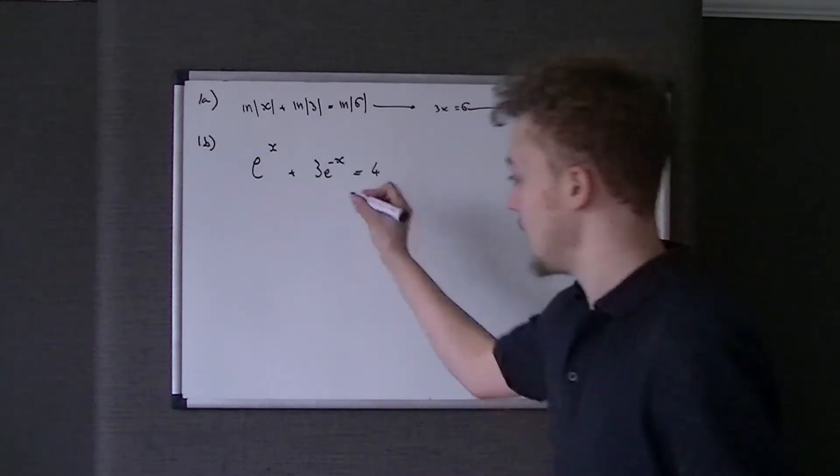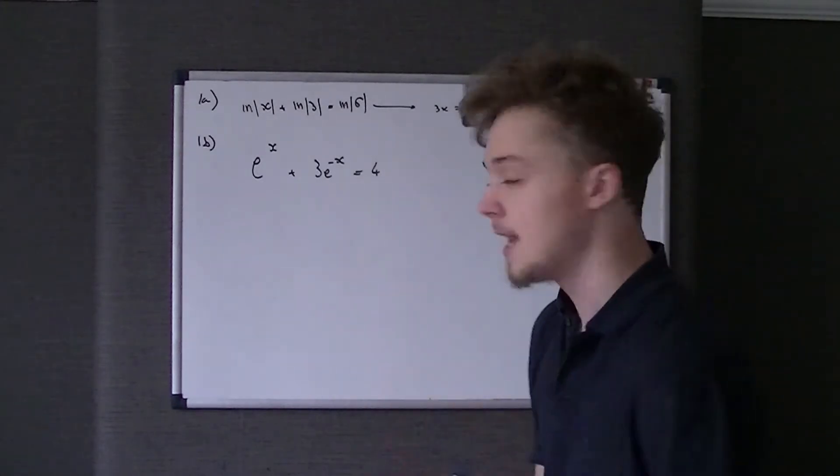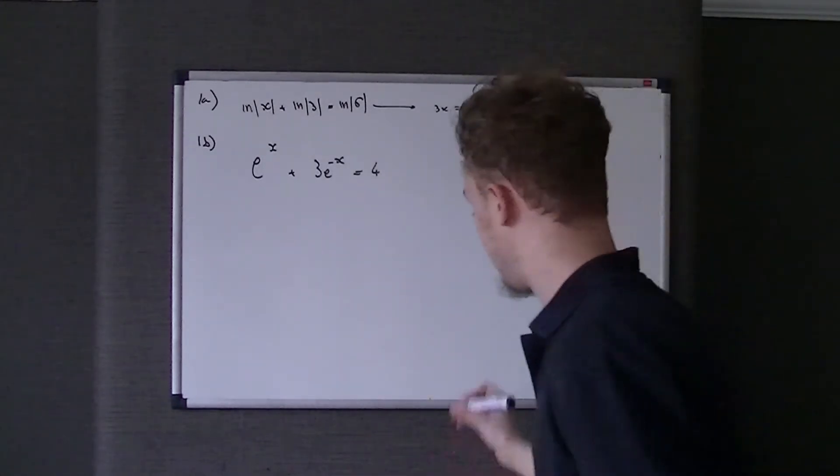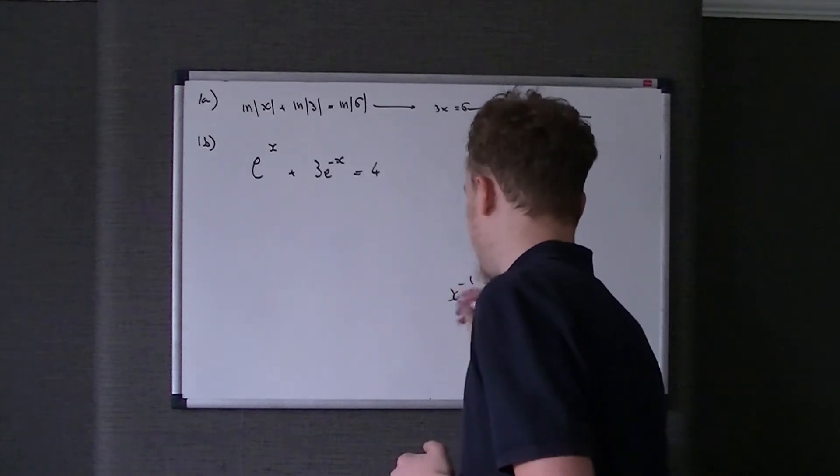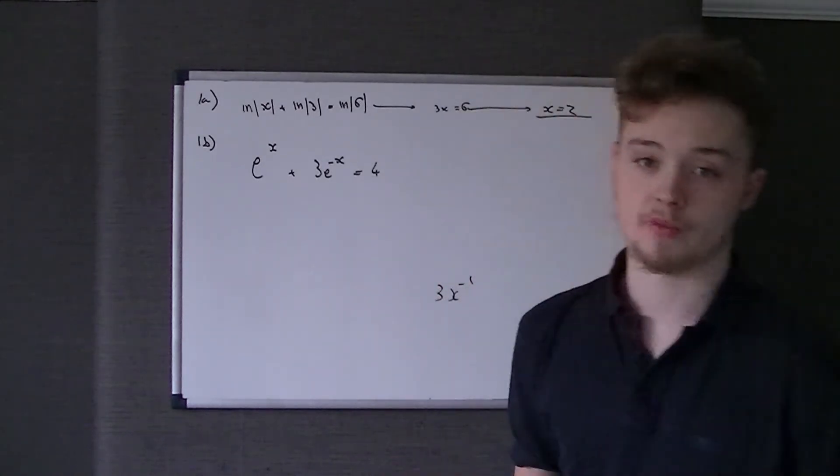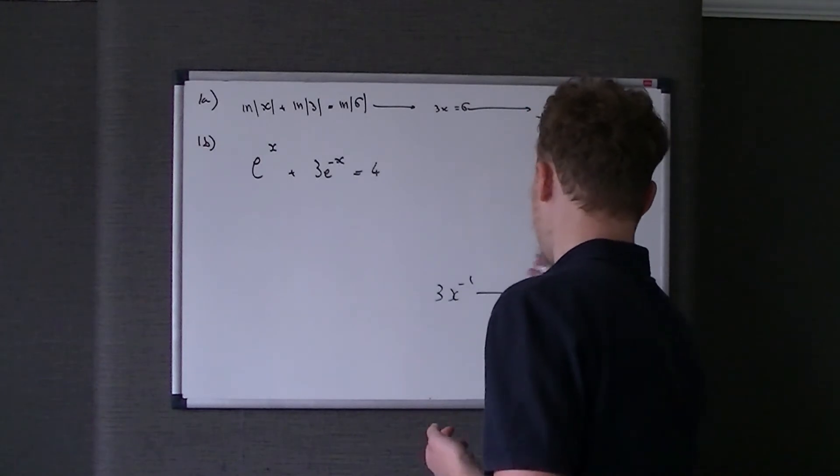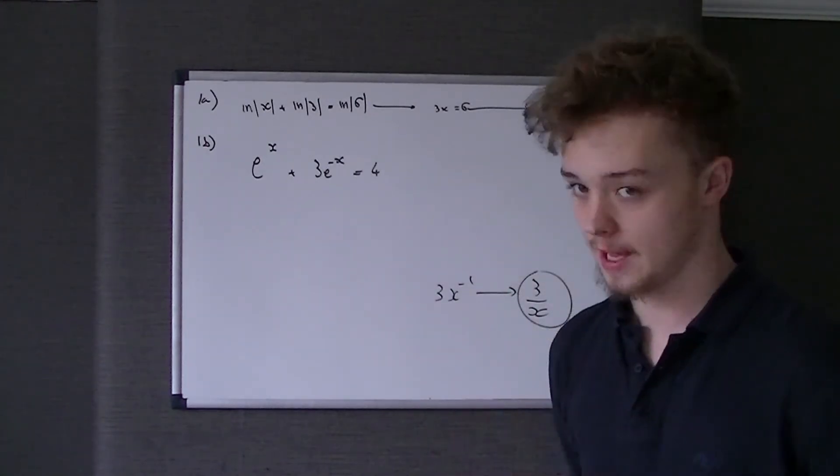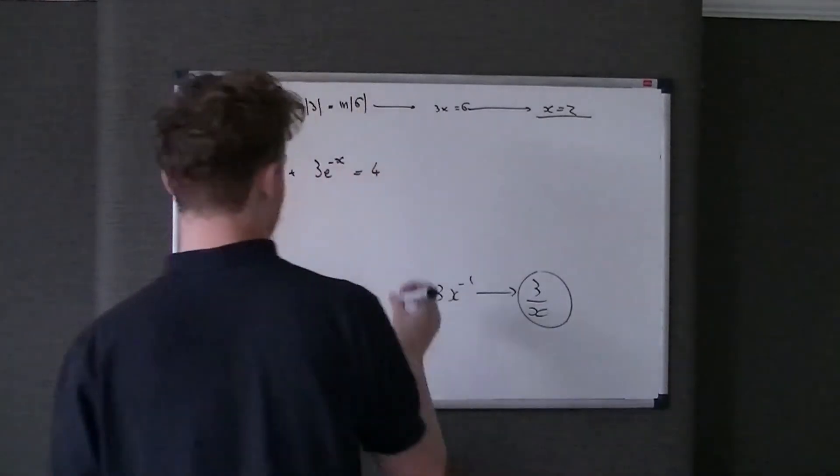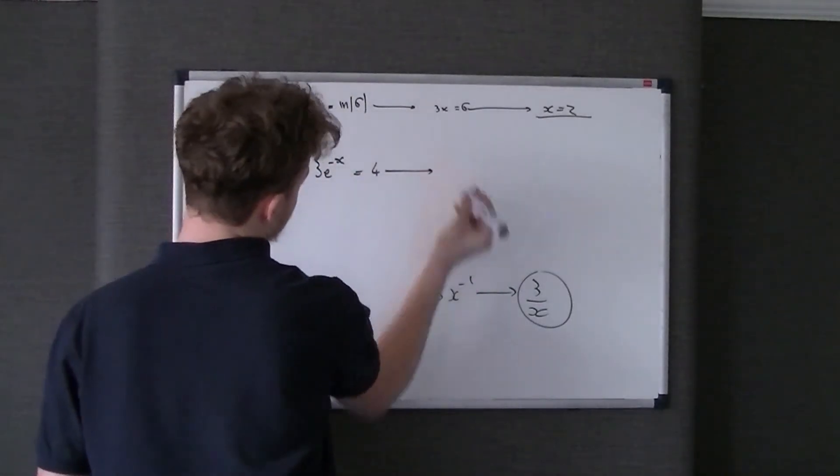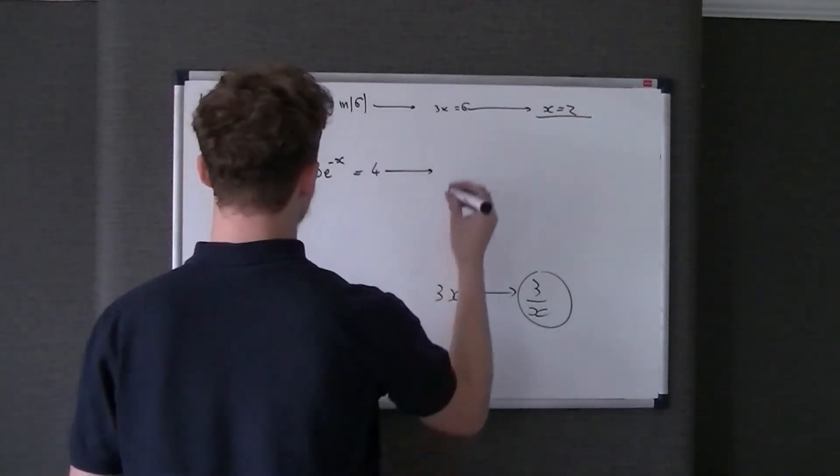Let's do two steps. The first step, if that didn't say e to the power of negative x, if that said x to the power of negative 1, if that was 3x to the power of negative 1, what you'd want to do is go it's 3 over x then. And you do the similar thing here, so don't be put off by the fact it's to the power of negative x, so essentially 1 over.